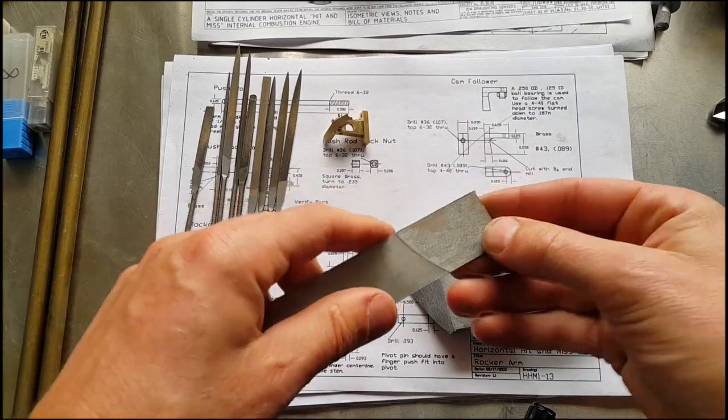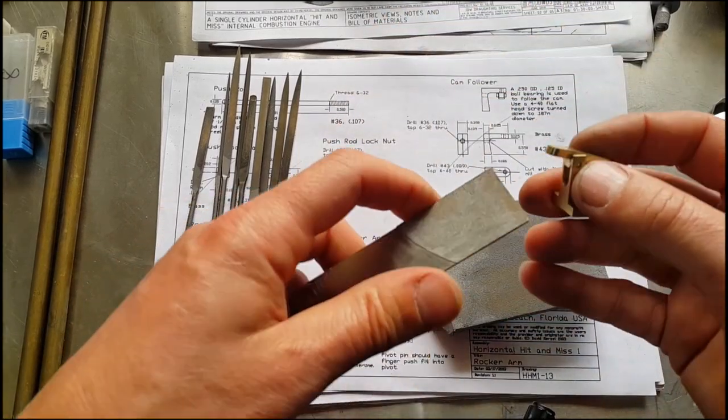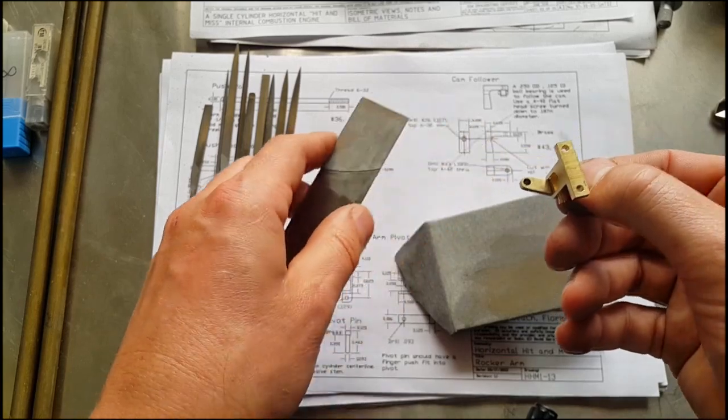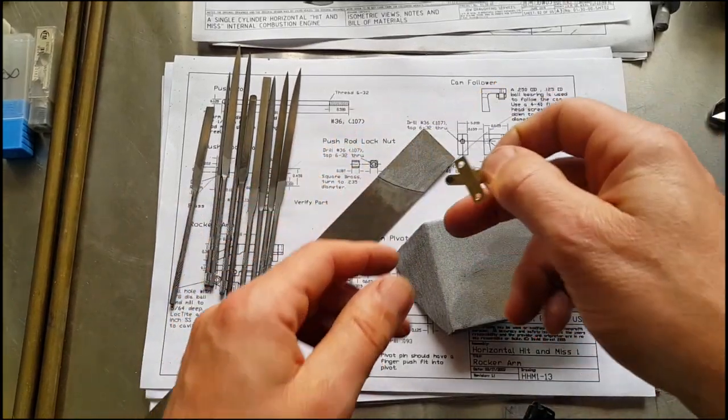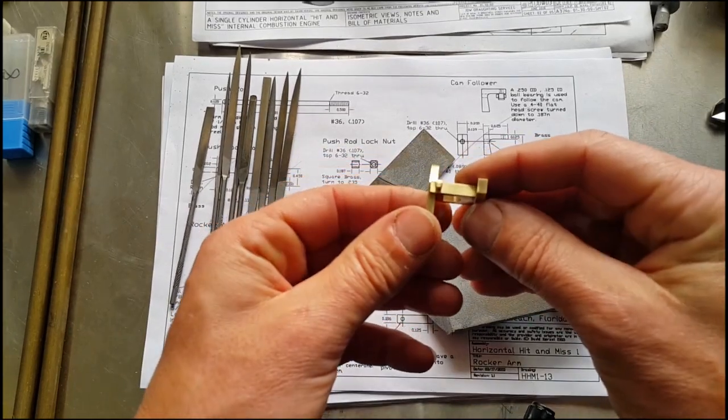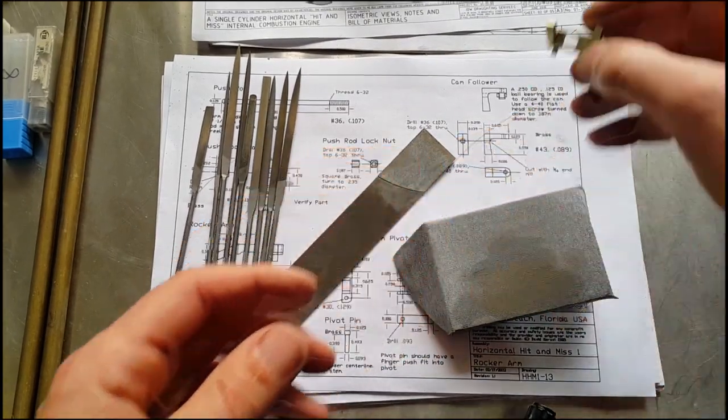I mainly use these to get rid of the coarse machining marks you can get in brass once it comes off the mill. I'll show you a sample of that.